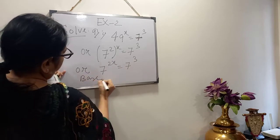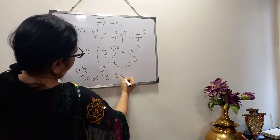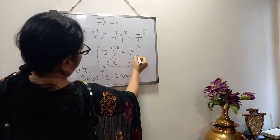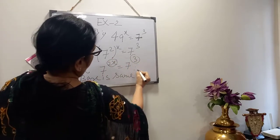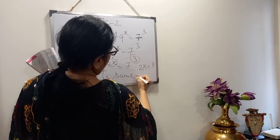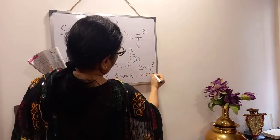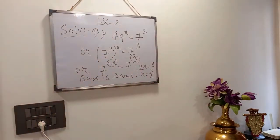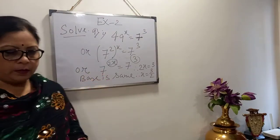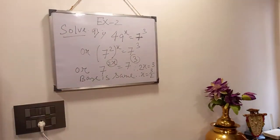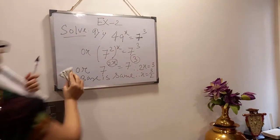From both sides you can see the base is the same. When the base is the same, by the rule we can equate the powers. So we write 2x equals 3, therefore x equals 3 by 2. This is the solution of sum number 1.